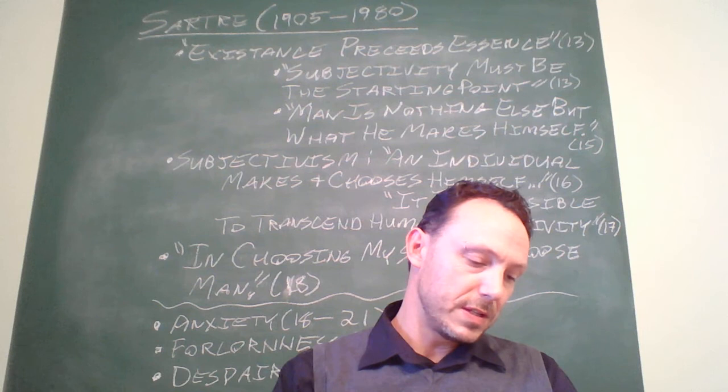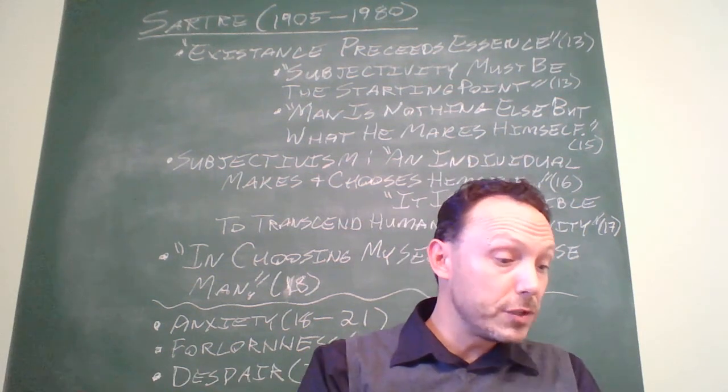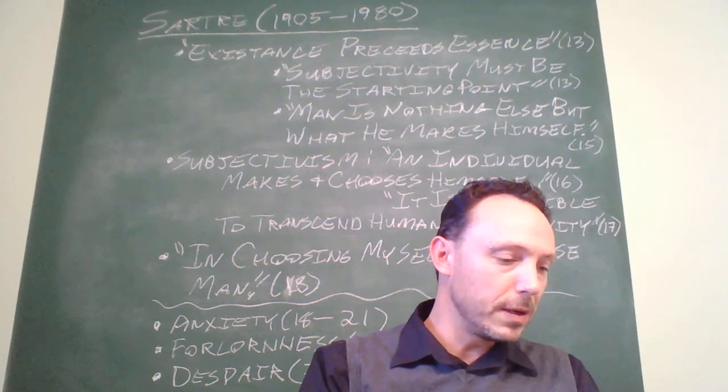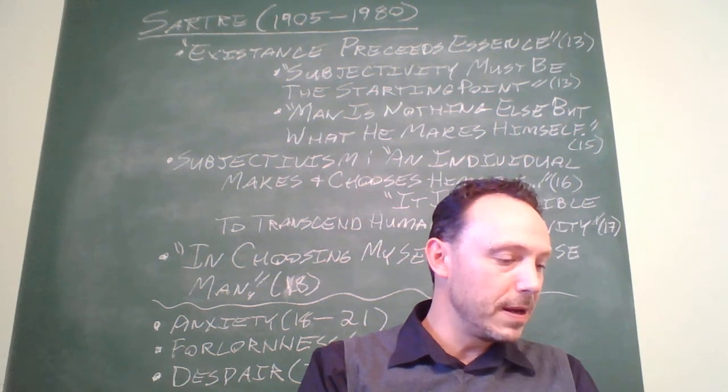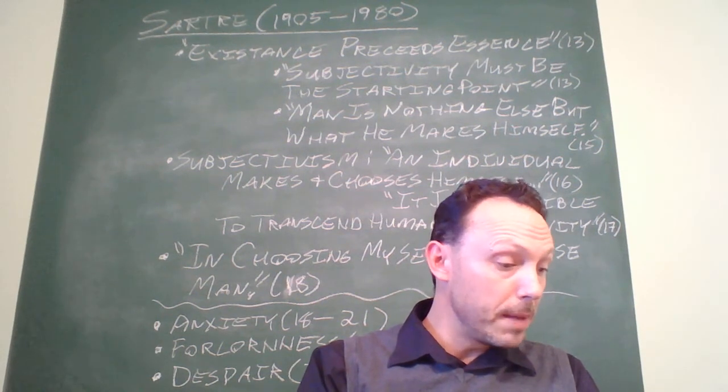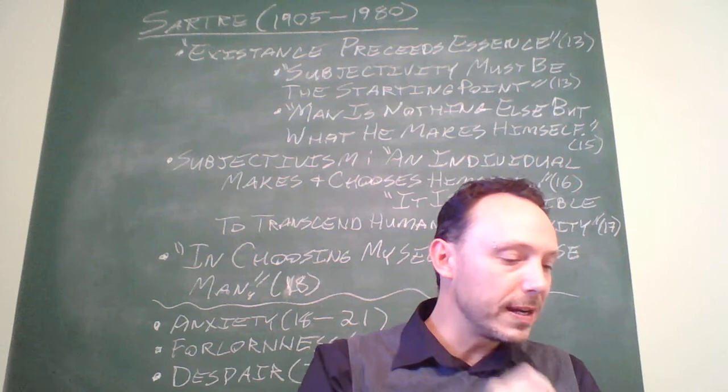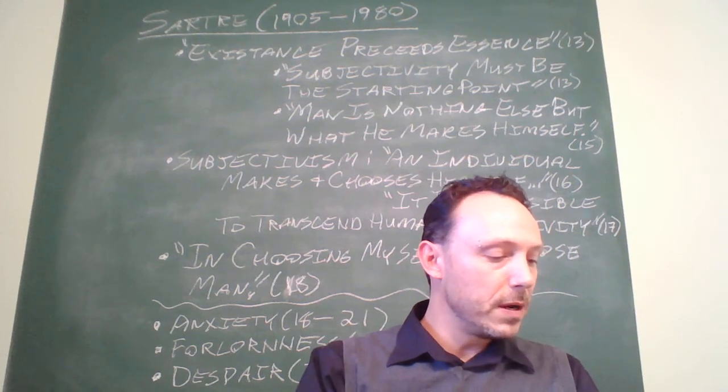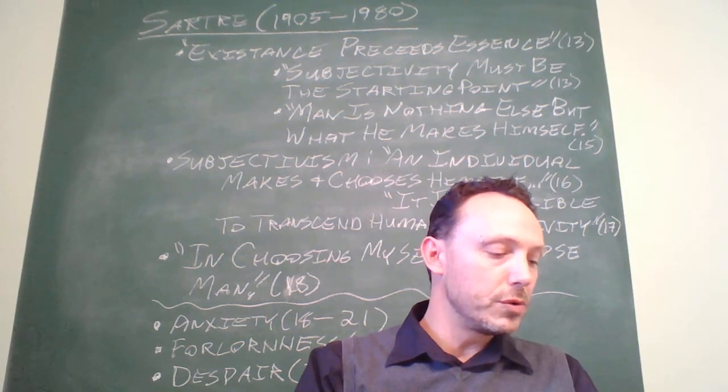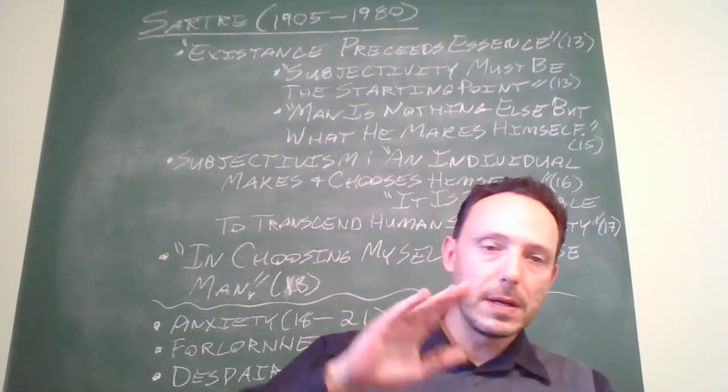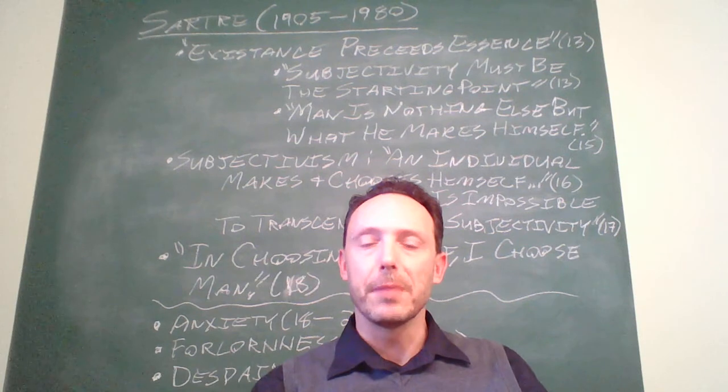let's start on 17 to make a more individual manner if I want to marry to have children even if this marriage depends solely on my own circumstances or passion or wish I'm involving all of humanity in monogamy and not merely myself therefore I'm responsible for myself and for everyone else in creating a certain image of human of my own choosing and choosing myself I choose mankind